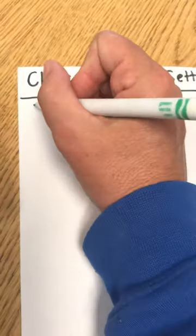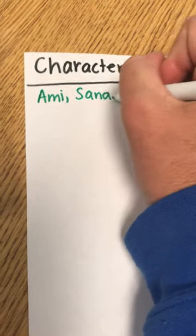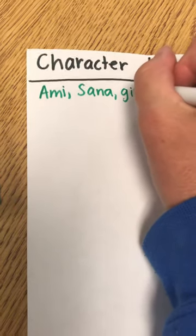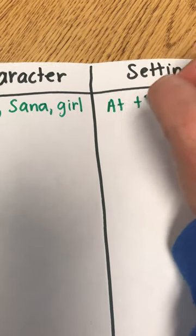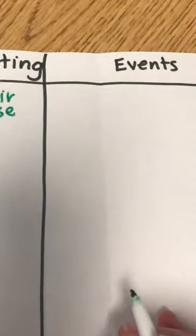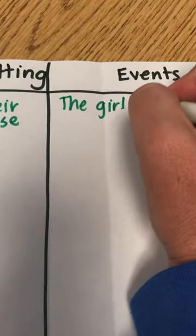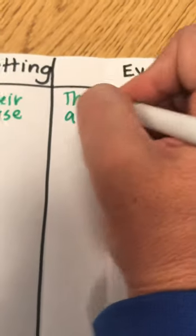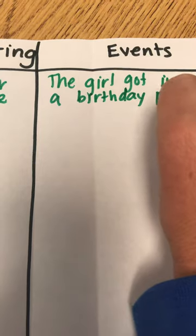So, so far our characters are Ami, and we've heard Sana, and there's a girl but we don't know her name yet because the story has not told her name yet — we'll just put 'the girl that was invited to the birthday party.' The setting — where is it? It's at their house. The girl got invited to a birthday party.